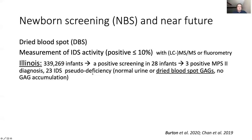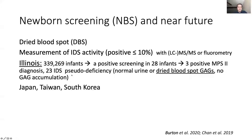There was pseudo deficiency, which implies another test should be done for GAG positivity. These kids basically showed no dried blood spot GAGs or urine GAGs. It's still unclear whether these pseudo deficiency kids will later have attenuated disease or no disease at all. Japan, Taiwan, and South Korea are also doing newborn screening.